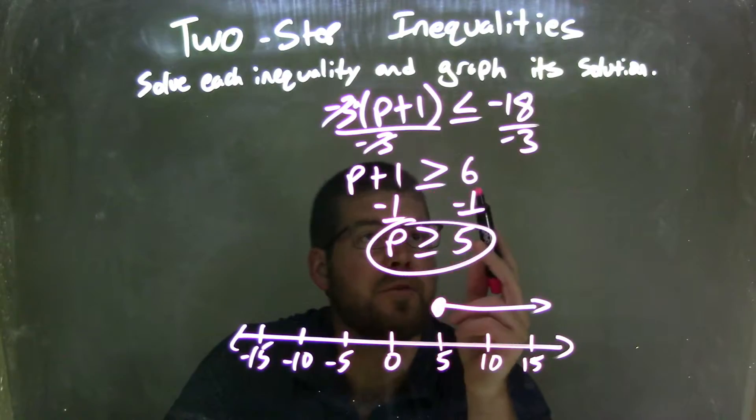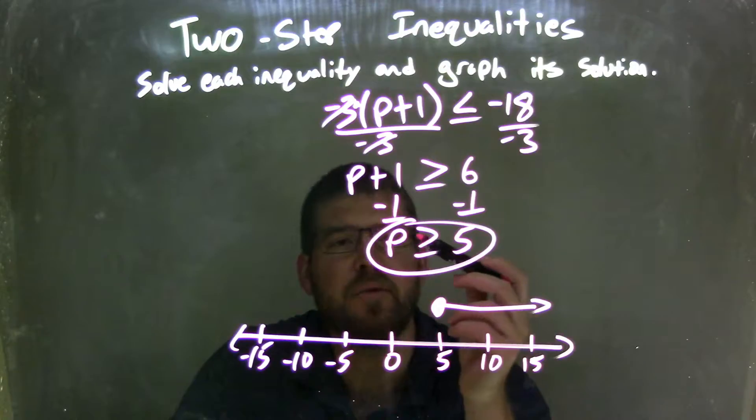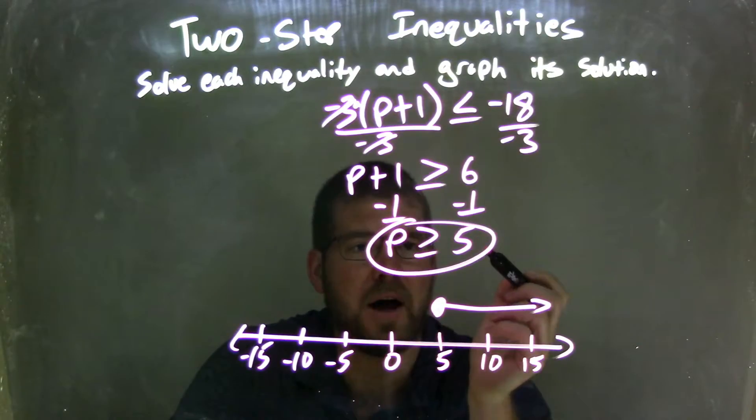From there, I had p plus 1 is greater than or equal to positive 6. I then subtracted 1 from both sides, leaving me with p is greater than or equal to positive 5.